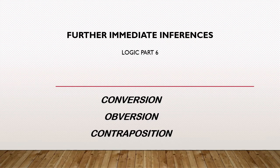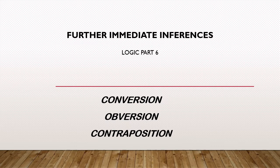Welcome back. In the previous session, we had learned how to draw immediate inference based on the traditional square of opposition. In this session, we shall present three other types of methods with the help of which we can draw immediate inferences. And these three methods are conversion, obversion, and contraposition.